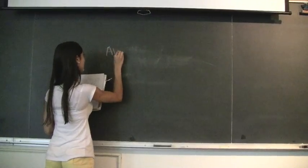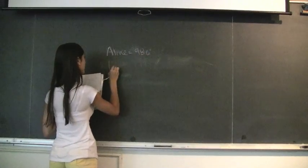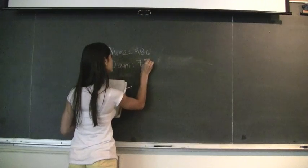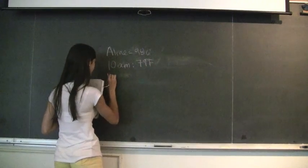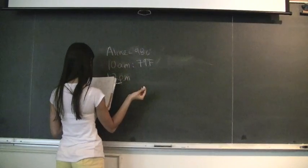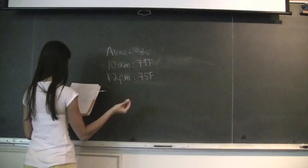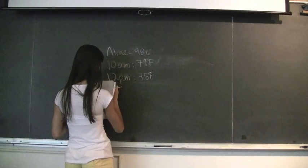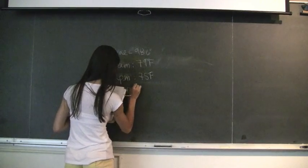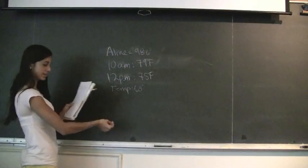When she's alive, she's 98.6 degrees Fahrenheit. At 10 o'clock when we found her, she was 79 degrees Fahrenheit. And when we came back at 12, she was 75 degrees Fahrenheit. And the temperature outside is 68, or was 68. You can use this information to find out when she died.